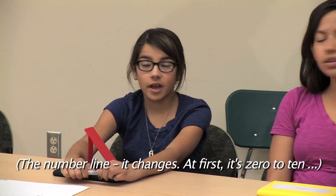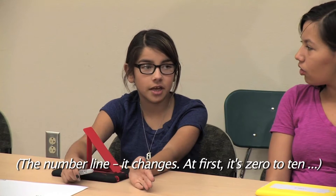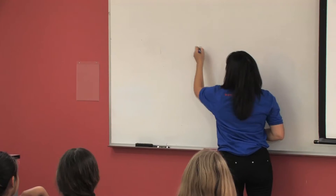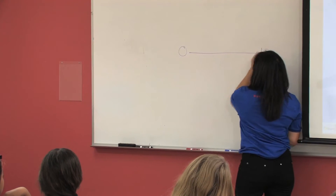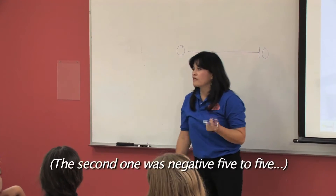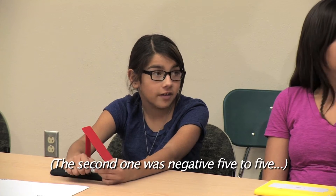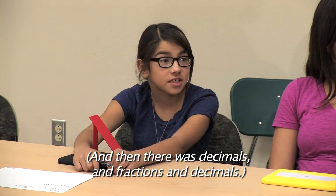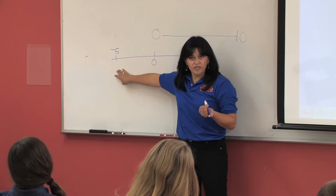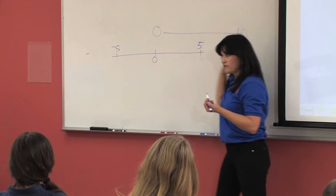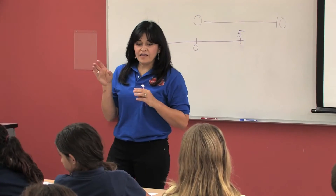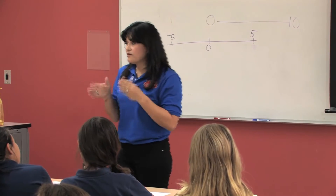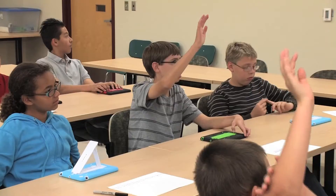Any other hints for getting things done faster? Stay away from the eel. You can double click. Bella: The number line changes — at first it's 0 to 10, and the second one was negative 5 to 5. And then there were decimals, fractions and decimals. Did some of them even start with fractions or end with fractions? So what kind of fractions did you guys see? Are there any clues about the number line itself that you can use when you're looking for fractions and decimals?